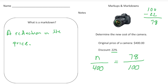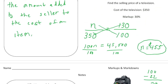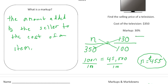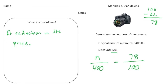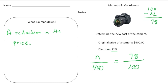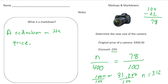This is really important: notice that on the markup problem I added the percentage to 100 to get 130, but when it's a discount I subtracted the percentage from 100. Now using algebra to solve: 100n equals 78 times 400, which is 31,200. Dividing both sides by 100, n equals $312 — that's the new cost of the camera after the 22% markdown.